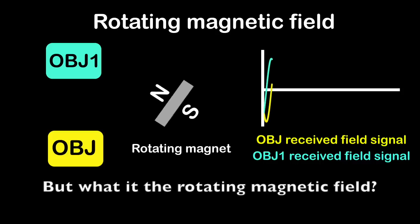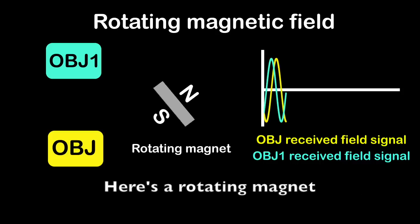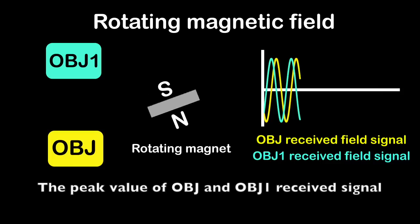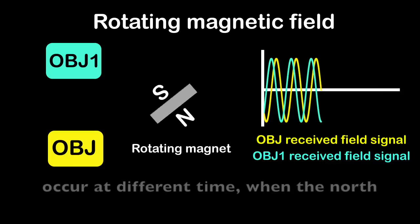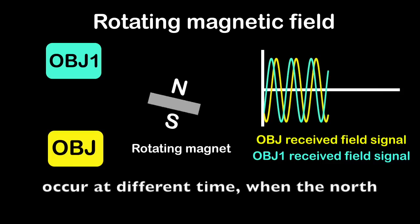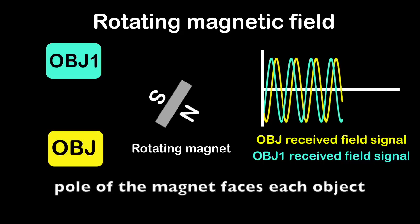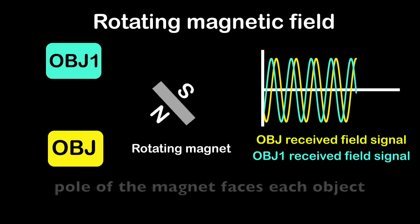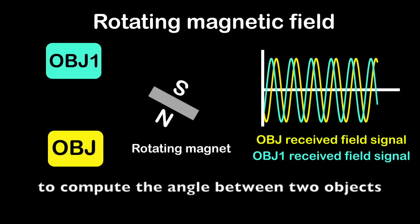What is the rotating magnetic field? Here's a rotating magnet. The peak value of OBJ and OBJ1 received signals occur at different times when the north pole of the magnet faces each object. The time difference is then used to compute the angle between two objects.